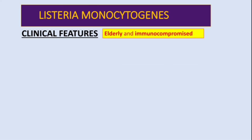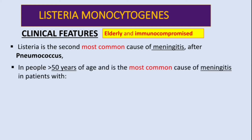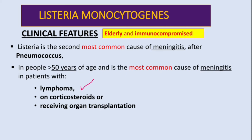The last group is immunocompromised and elderly individuals. Listeria is the second most common cause of meningitis after pneumococcus (Streptococcus pneumoniae). In people older than 50 years, it is the most common cause of meningitis in patients with lymphoma, patients on corticosteroids, or those receiving organ transplants.